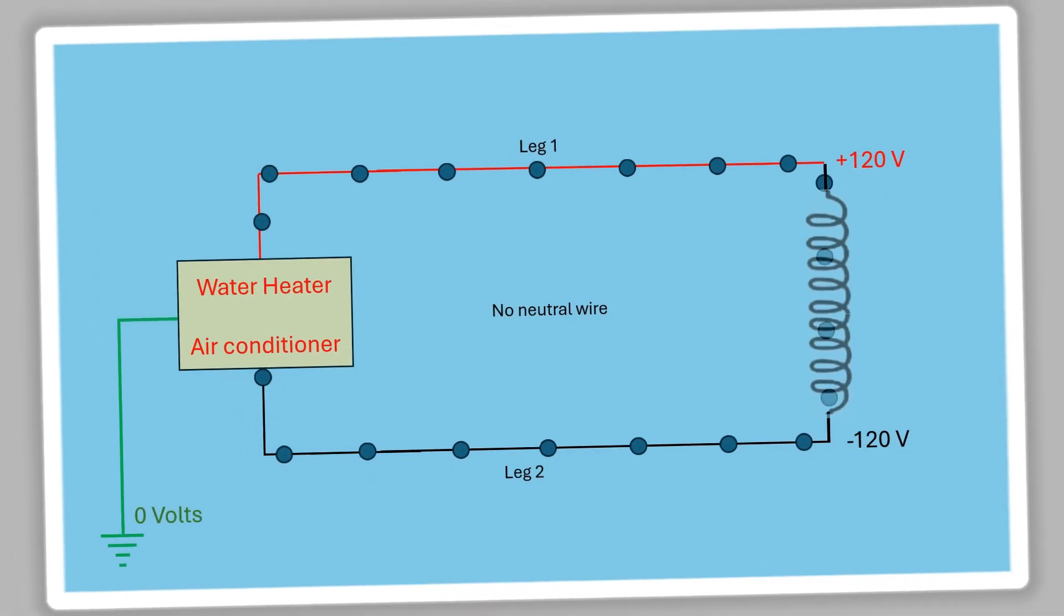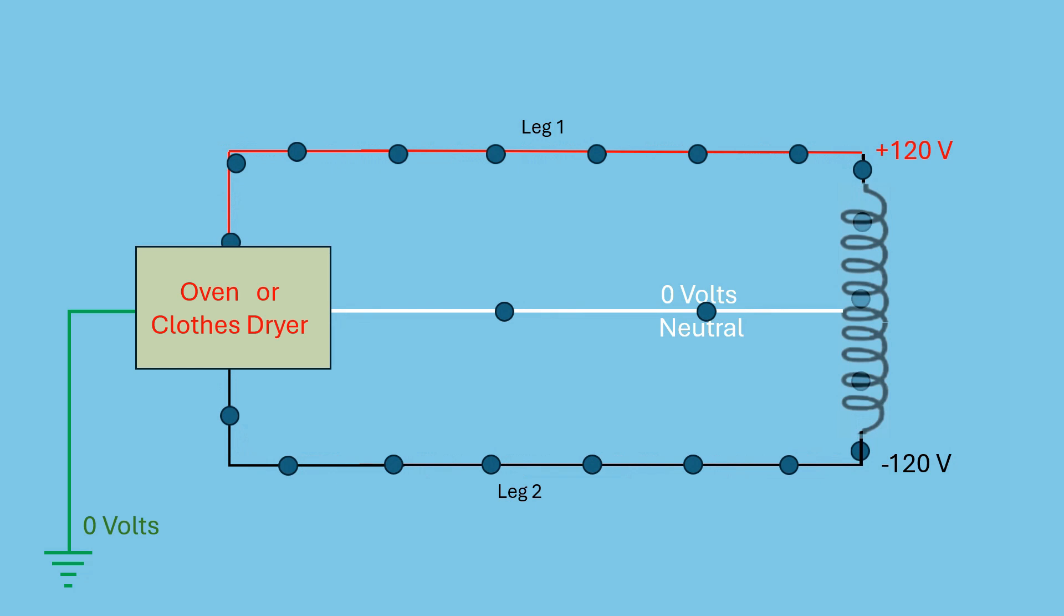And now, here's another 240 volt circuit. This time, it's powering an oven or a clothes dryer. Notice there is a neutral wire here. Why? Some components, like lights, buzzers, timers, and displays, run on 120 volts. So appliances, like ovens and clothes dryers, use both 240 volts and 120 volts. And this is why these appliances must have a neutral wire. You'll also see a ground wire connected to each of these appliances.